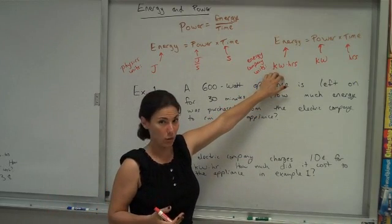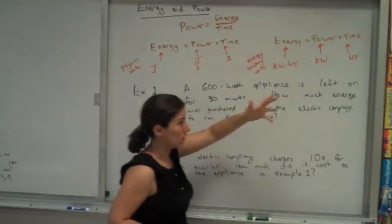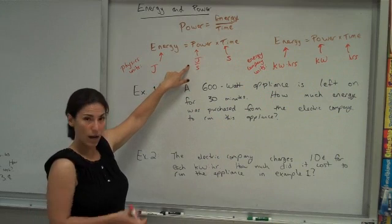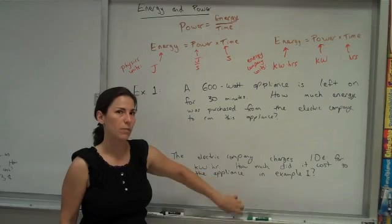So since we're relating to the electric company, we may as well use electric company units, meaning we're going to want to convert watts to kilowatts and minutes to hours. Had we been doing physics units, we'd want to leave watts alone or joules per second alone and then convert those minutes to seconds. But this is all about the electric company, so we'll use their units.